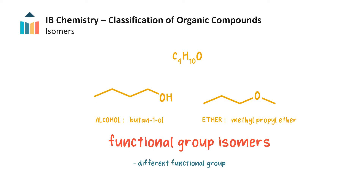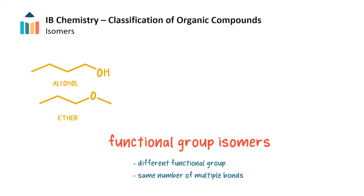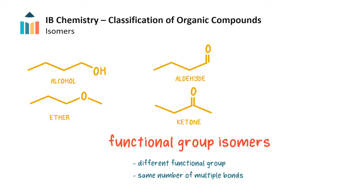If two isomers contain different functional groups, they are functional group isomers. Functional group isomers must have the same number of multiple bonds, so only certain pairs of functional groups can be related in this way. Ethers may be isomers of alcohols, ketones may be isomers of aldehydes, and esters may be isomers of carboxylic acids.